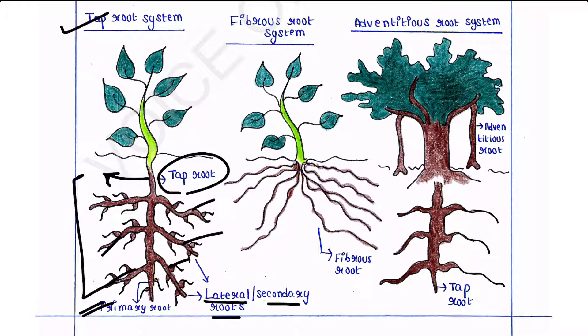This is called the tap root system. From the name you can understand that this type of root grows deep down the soil and sucks water from very deep. It works like a water tap. This type of root system is observed in dicotyledon plants.